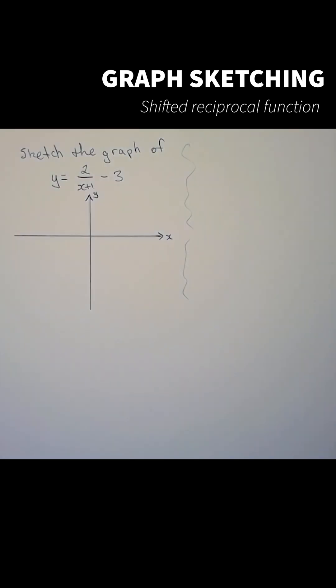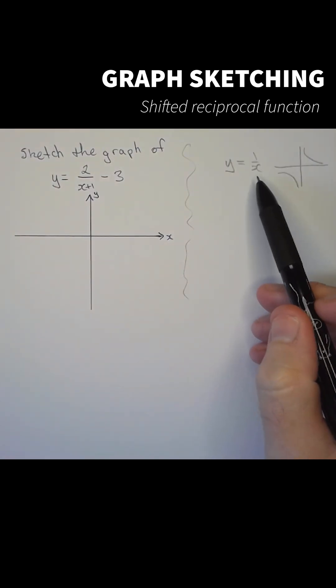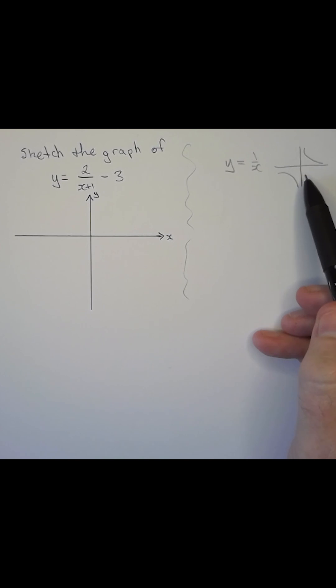Let's sketch the graph of y equals 2 over x plus 1 minus 3. The graph of y equal to 1 over x looks roughly like this, where we have a horizontal asymptote at y equal to 0 and a vertical asymptote at x equal to 0.